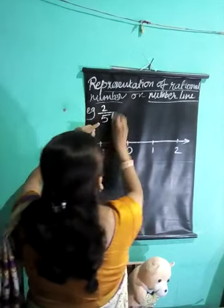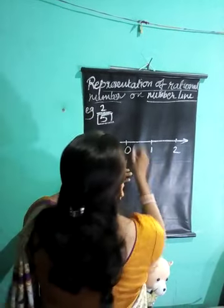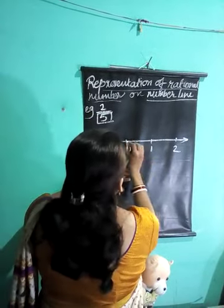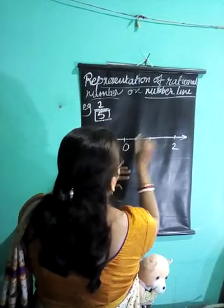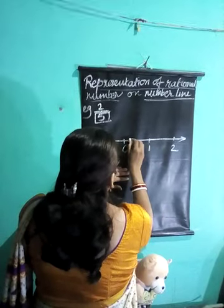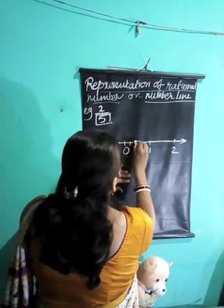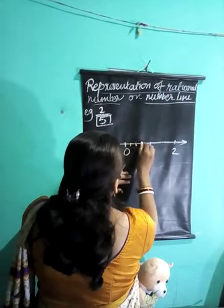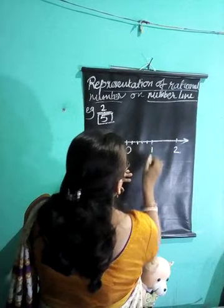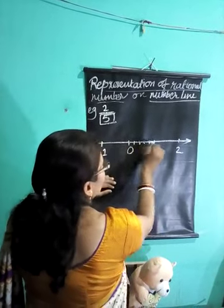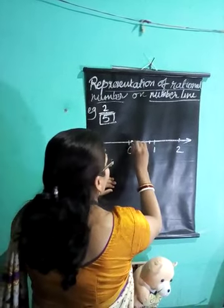Now your denominator is 5. So between 0 and 1, you will be dividing it into 5 equal parts: 1, 2, 3, 4, 5. See, the lines are 4 but the parts are 5.